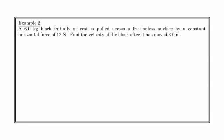So here is example two. And you'll notice when I read this that this sounds a lot like a force in kinematics question. But we're going to do this using energy. A six kilogram block is initially at rest. And it's pulled across a frictionless surface by a constant horizontal force of 12 newtons. Find the velocity of the block after it's moved three meters.